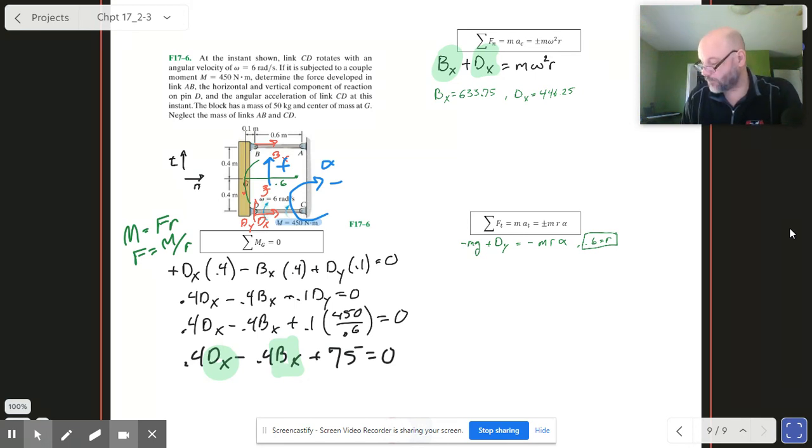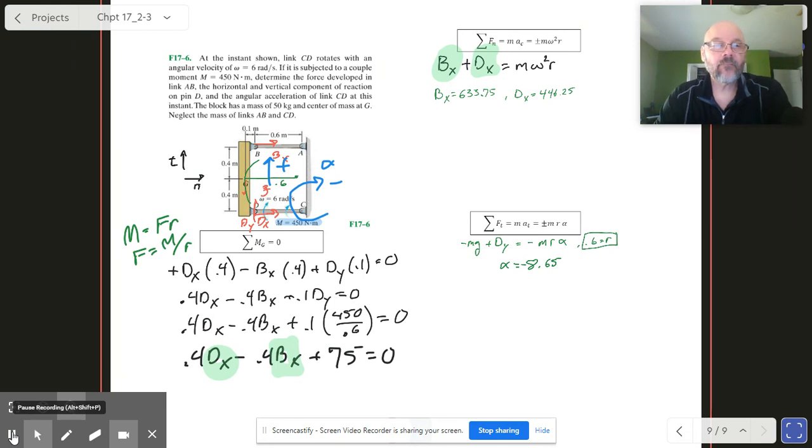Anyway, when you go through all of that, alpha turns out to be 8.65, negative on there of course. Yeah, I like that.